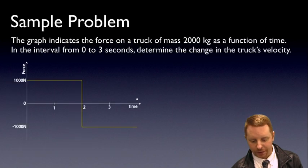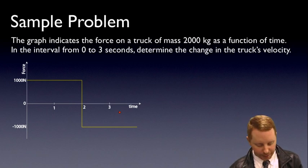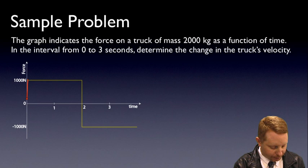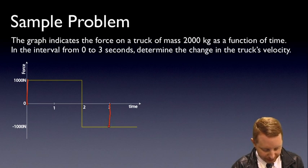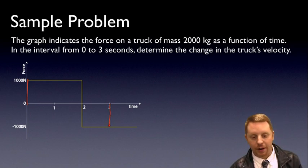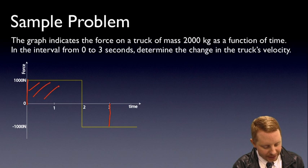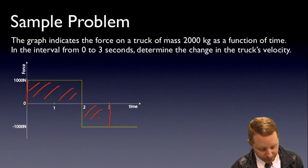Let's take a look at a sample problem and see what we can do with it. The graph here indicates the force on a truck of mass 2,000 kilograms as a function of time. In the interval from 0 to 3 seconds, determine the change in the truck's velocity. So I'm going to focus here on the time from 0 to 3 seconds. And since it's a force time graph, what I'm really after is the area under the graph here.